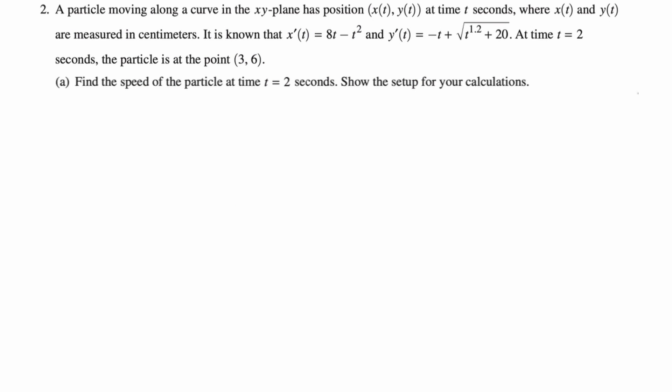A particle moving along a curve in the xy plane has position x(t), y(t) at time t seconds, where x(t) and y(t) are measured in centimeters. It is known that x'(t) = 8t - t² and y'(t) = -t + √(t^1.2) + 20. At time t = 2 seconds, the particle is at the point (3, 6). Part (a): Find the speed of the particle at time t = 2 seconds. Show the setup for your calculations.